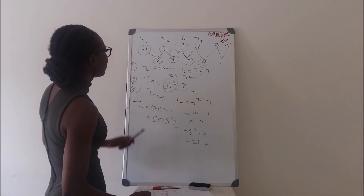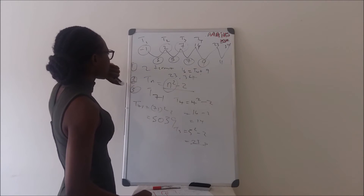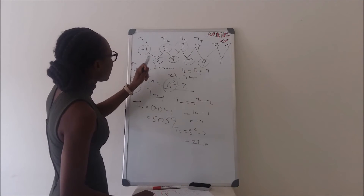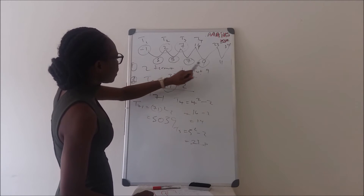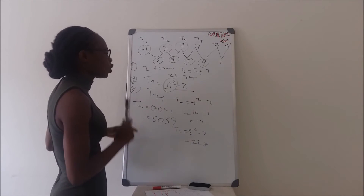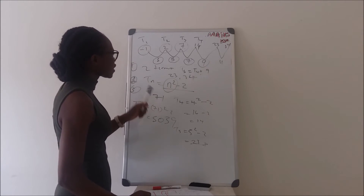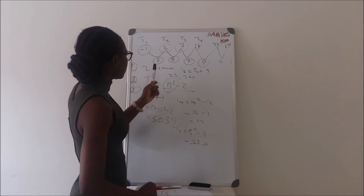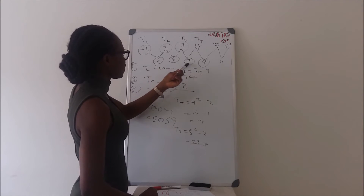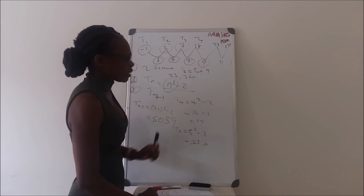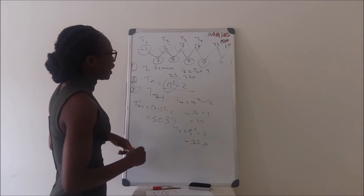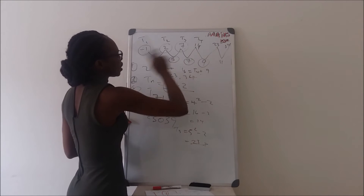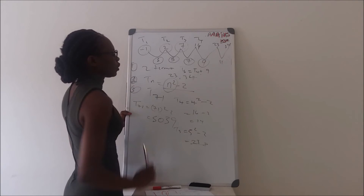Let's recap. You have a pattern: negative 1, 2, 7, 14, 23, and 34. The first difference is 3, 5, 7, 9, and 11. So you can see the first difference is not the same — that means this pattern is not a linear sequence. But these differences are odd numbers: 3, 5, 7, so the next must be 9 and then 11. To find the next term, you add the first difference to the previous term, giving us 23. Then 23 plus 11 gives us 34.